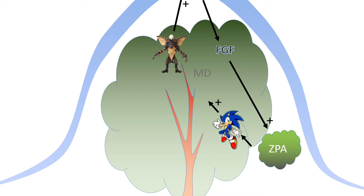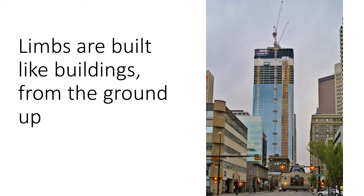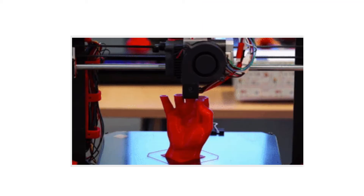The limb continues to grow and is built like a building from the ground up. Limbs are not built as a tiny little limb that then grows — it's actually constructed row by row, floor by floor, like a building. The structures at the base are terminally differentiating while the very top is just being framed. It's different than a 3D printed model in that it's not fully formed as it goes along.